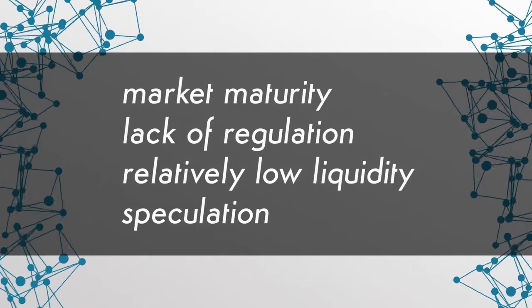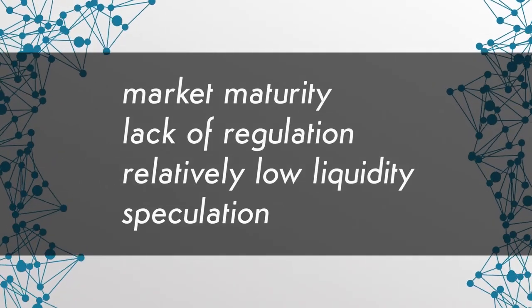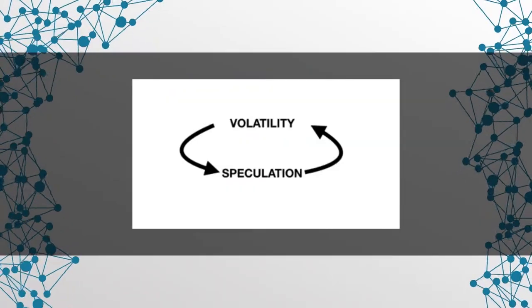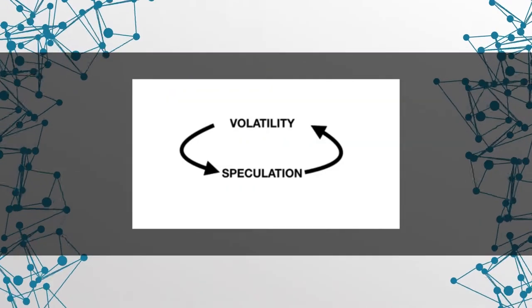There are several reasons why cryptocurrencies are so volatile. These include market maturity, lack of regulation, and relatively low liquidity. Speculation also plays a big part, which leads to a vicious cycle — volatility encourages speculation, which in turn contributes to price fluctuations. Stablecoins are here to mitigate that, at least theoretically.